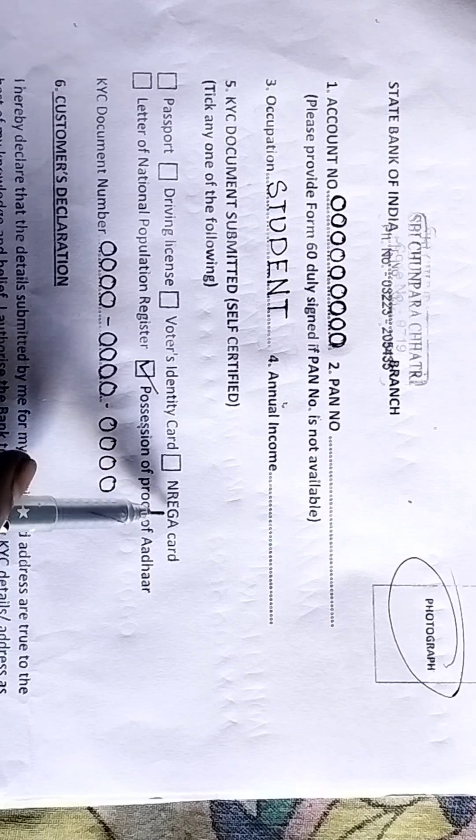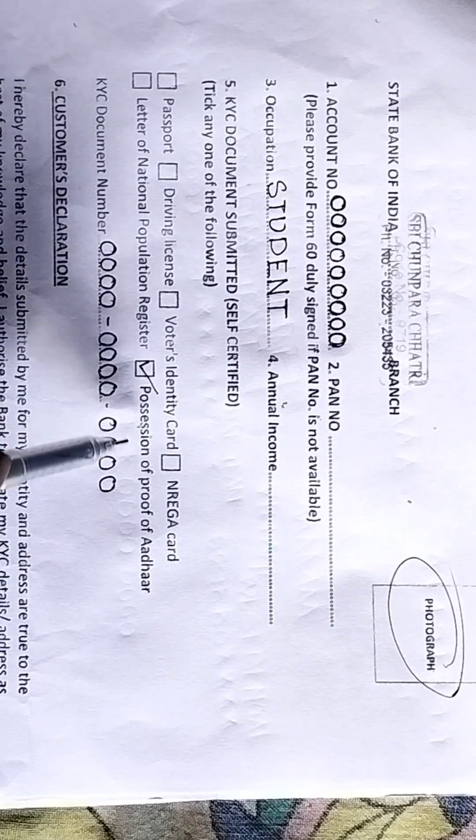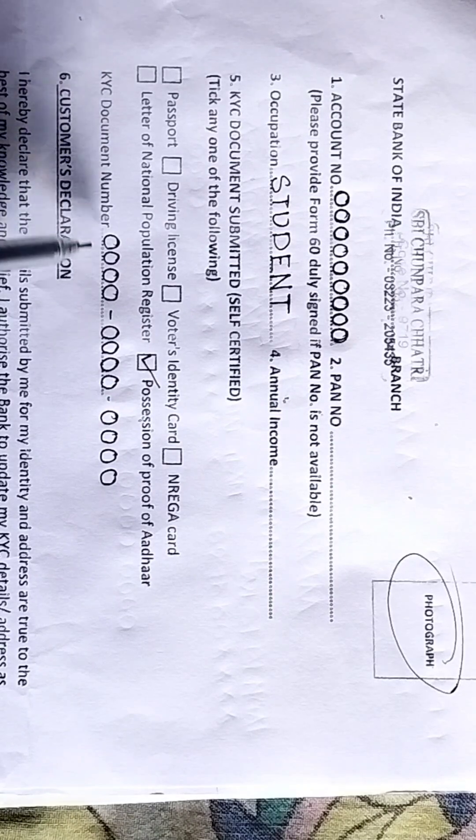Passport, Driving License, Border Identity Card, NREGA Card, Letter of National Population Register, and proof of Aadhar. Most people have an Aadhar card, so click on Aadhar card. We have the Aadhar card number, so click on Aadhar number.